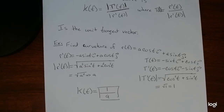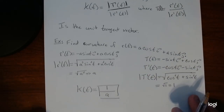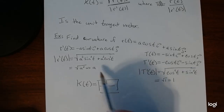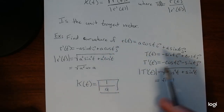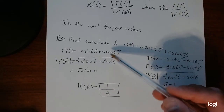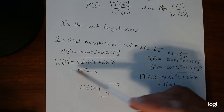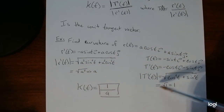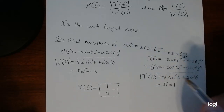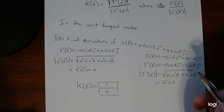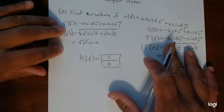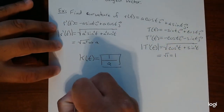As you can see, this is a pretty lengthy process. You have to take the derivative and the length of r, then compute the unit tangent vector, take its derivative, find that length, and then put it all together. Because of that, we have a different equation to make it much easier, expressed with respect to only one vector.